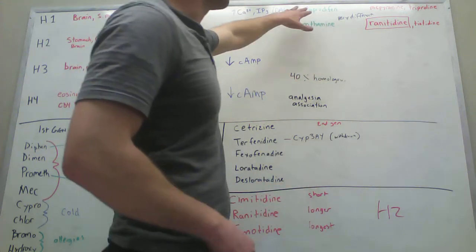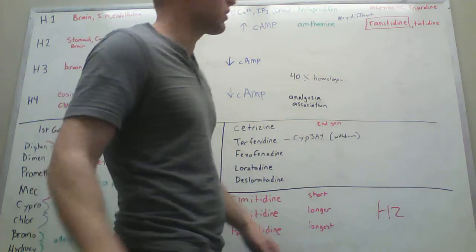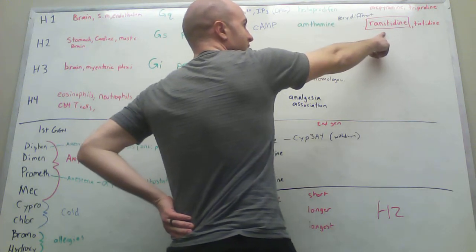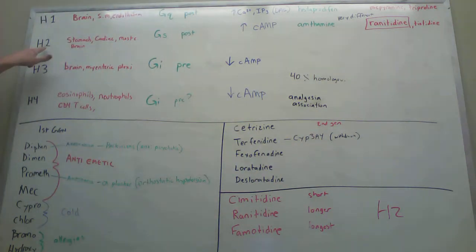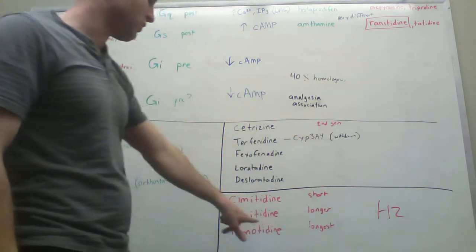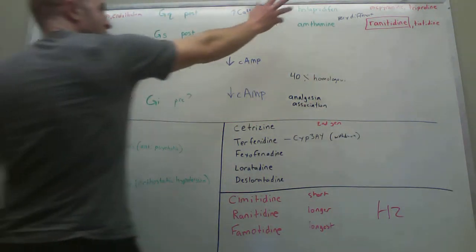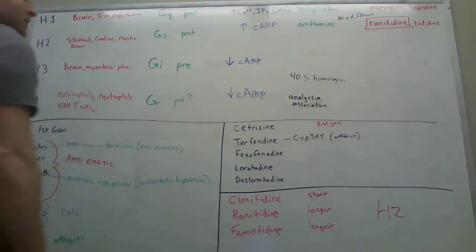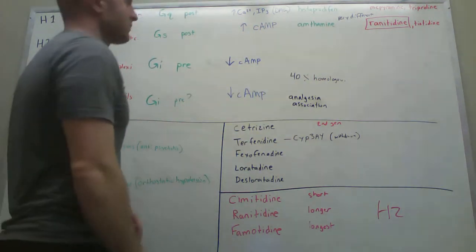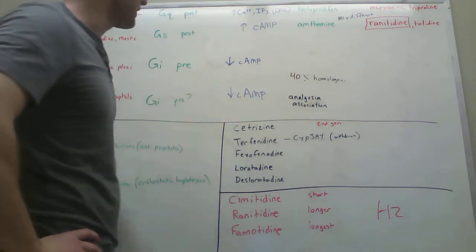I put the green for the agonists and these for the antagonists, but I didn't list them all because I don't know if they're really going to be important. But you do need to know that ranitidine is an antagonist for H2. H1 and H2 are actually very different in their structure. However, H3 and H4 are 40% homologous in their proteins.